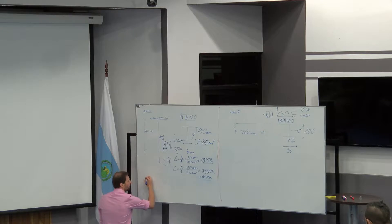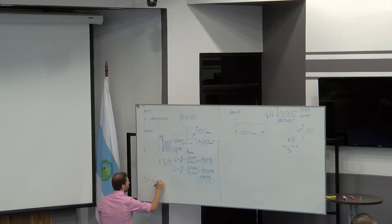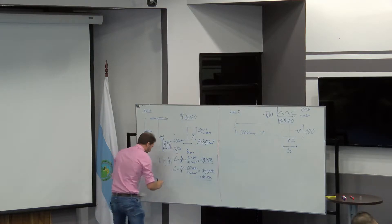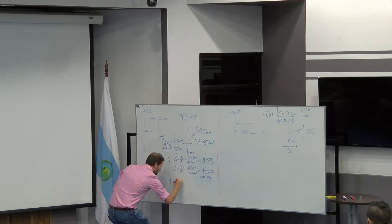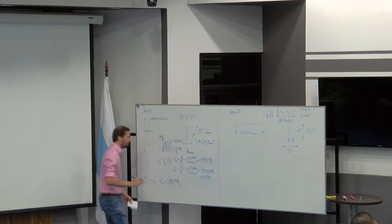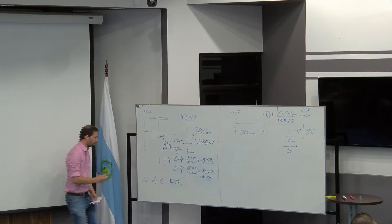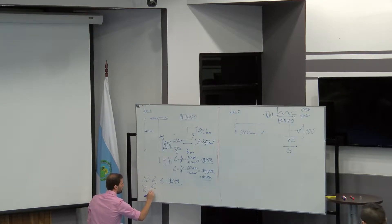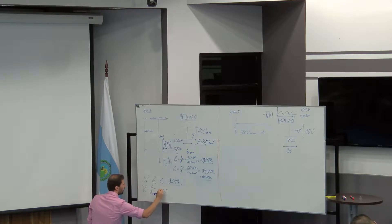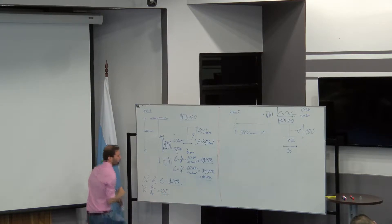We can calculate our delta sigma as sigma O minus sigma U, which here is 95 MPa, and the R value is plus 0.5.